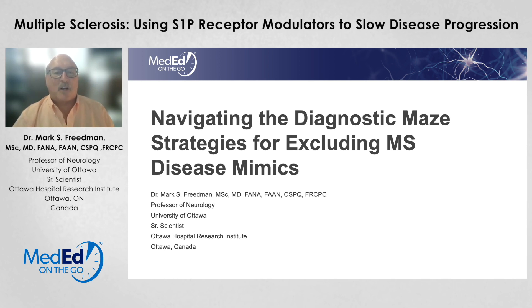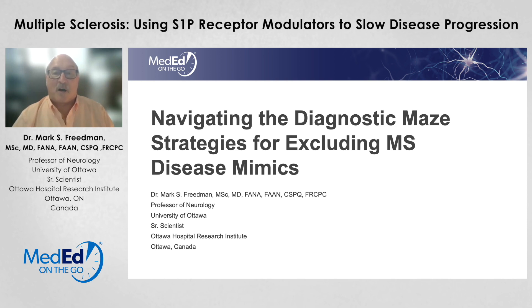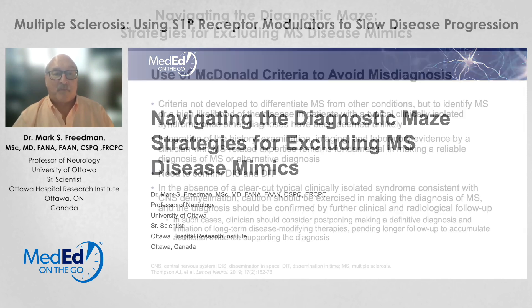I'm going to talk to you about navigating the diagnostic maze, which is basically how do you use the diagnostic criteria to make a clear diagnosis of MS? And the first and most important criterion is no better explanation — otherwise, exclude things that could look like multiple sclerosis. And that's key.